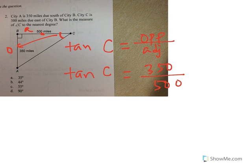And to solve for angle C, we've got to undo the tangent. So we take the inverse tangent of both sides. Whatever we do to one side, we've got to do the same thing to the other side. So the tangent and tangent inverse cancel out.